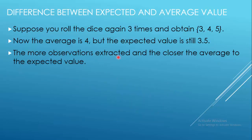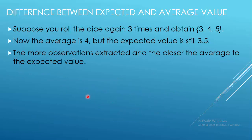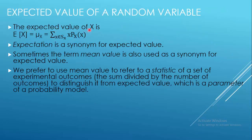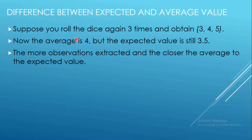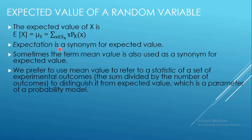The more observations extracted, the closer the average gets to the expected value. The difference between the average achieved after the experiment and the expected value before the experiment may be reduced by increasing the number of observations. The expected value E[X] equals μ_X = Σ x · P(x). Expectation and mean value are synonyms for expected value.